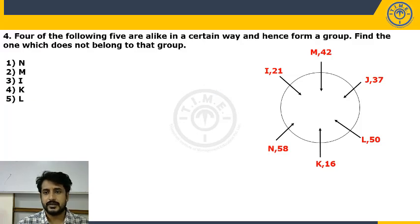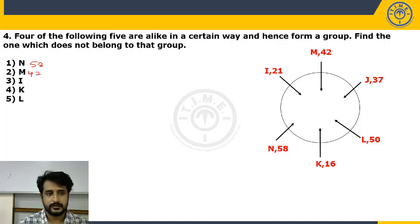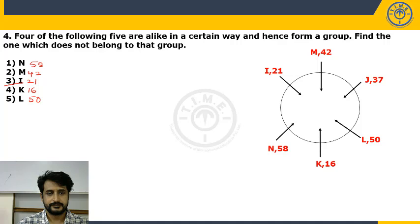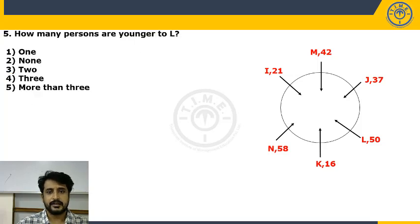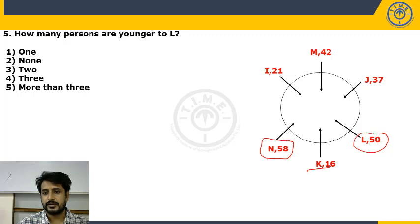Four of the following five are alike in a certain way and form a group — find the one that does not belong. N is 58, M is 42, I is 21, K is 16, L is 50. Except I, all remaining persons have even-number ages, whereas I's age (21) is an odd number — Choice 3. How many persons are younger than L? L's age is 50. Only one person is older than L, so the remaining four are all younger — answer is 4, more than 3 — Choice 5.